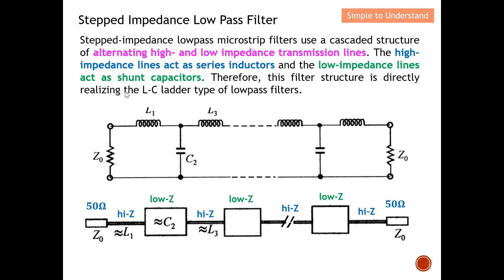One thing to highlight: whether you start with L or C doesn't matter. For this case, the input impedance starts with a high-Z followed by low, high, low, high, low. You could equally start with low, high, low, high, low. Either approach is correct — it is a cascade structure of alternating high and low impedance, so it's your choice.